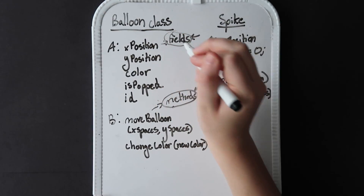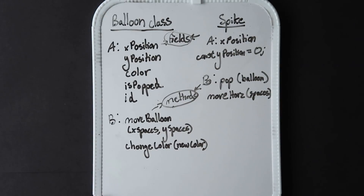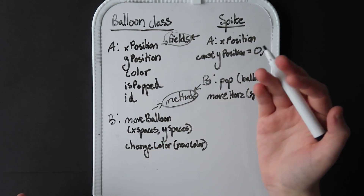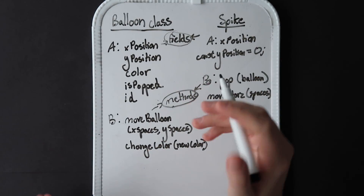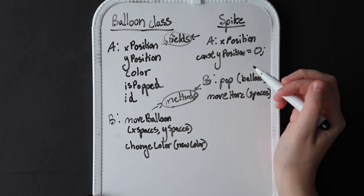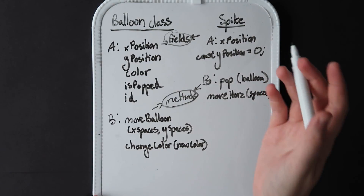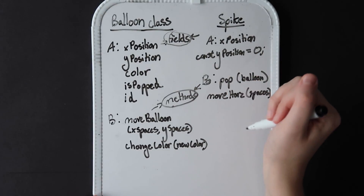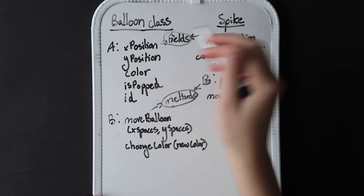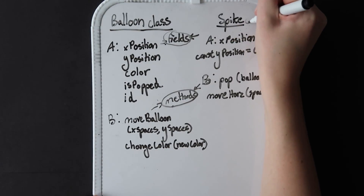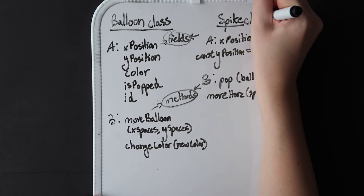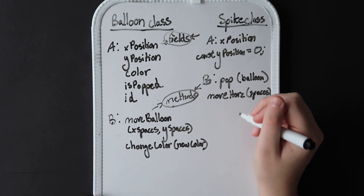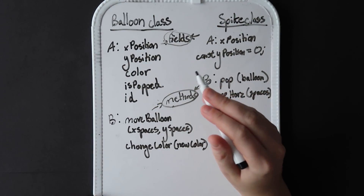A class is made up of fields and methods in Java. Keep in mind this is just a blueprint — we haven't created anything yet. We don't have any balloons and we don't have any spikes. We can build instances and objects based on these class blueprints. The blueprint is simply a template for what an object will have in code — the spike will have an X and Y position, we'll be able to move it horizontally and pop balloons. Now let's try creating some example balloons based on the balloon class blueprint.